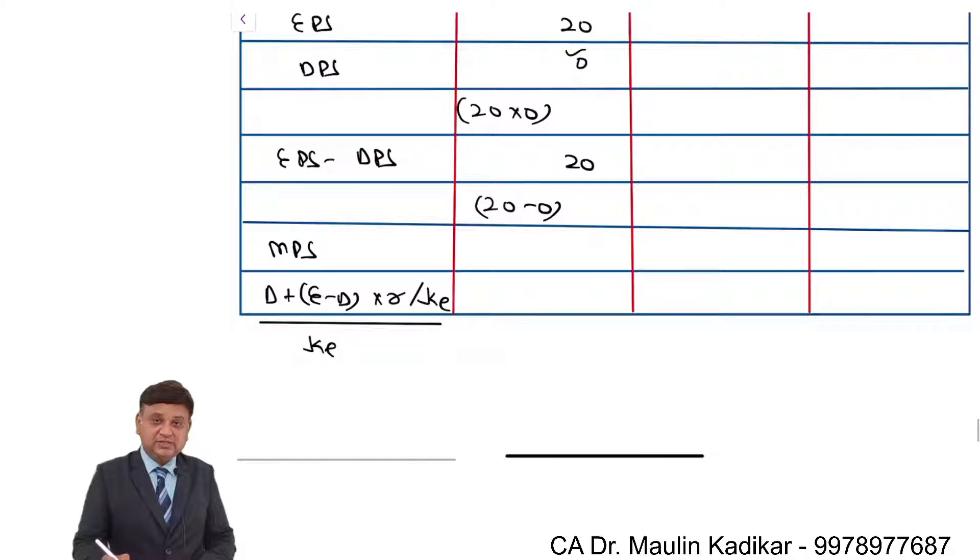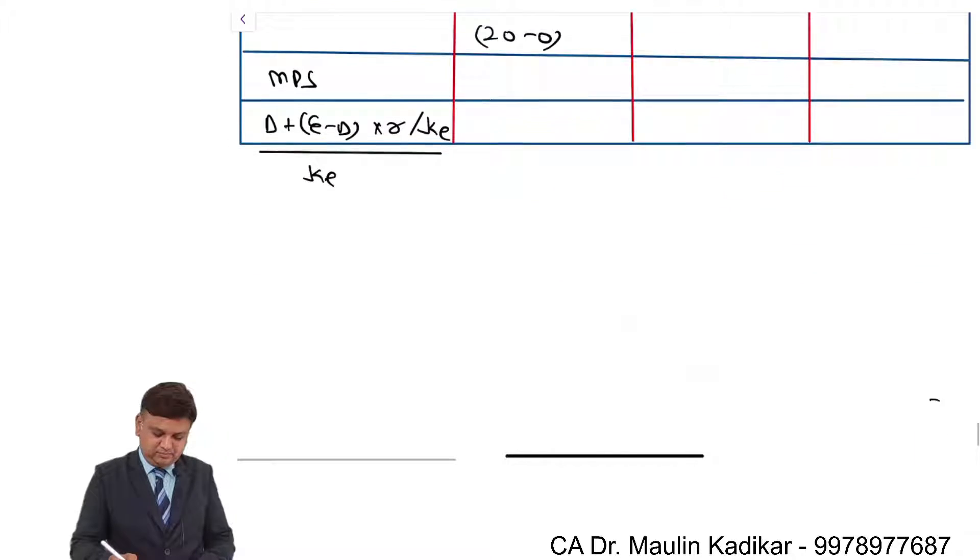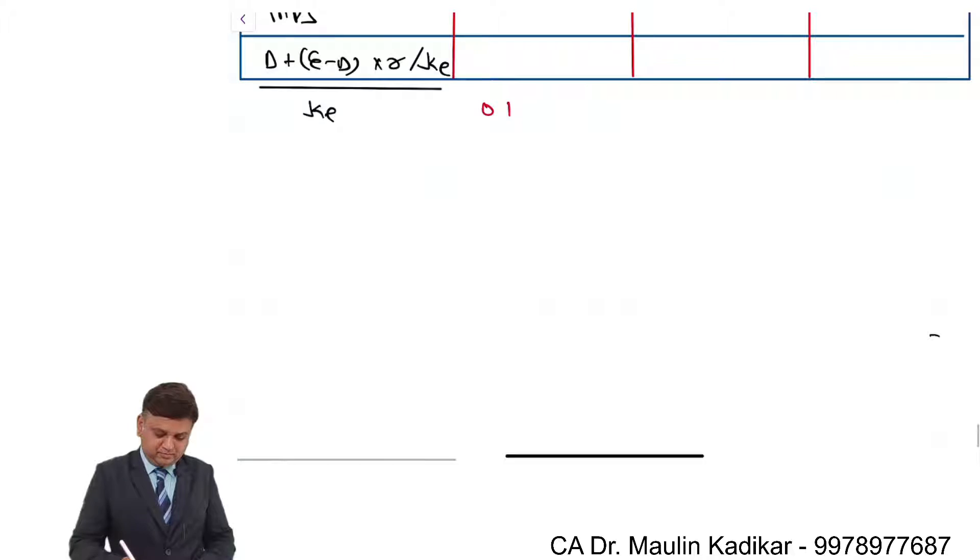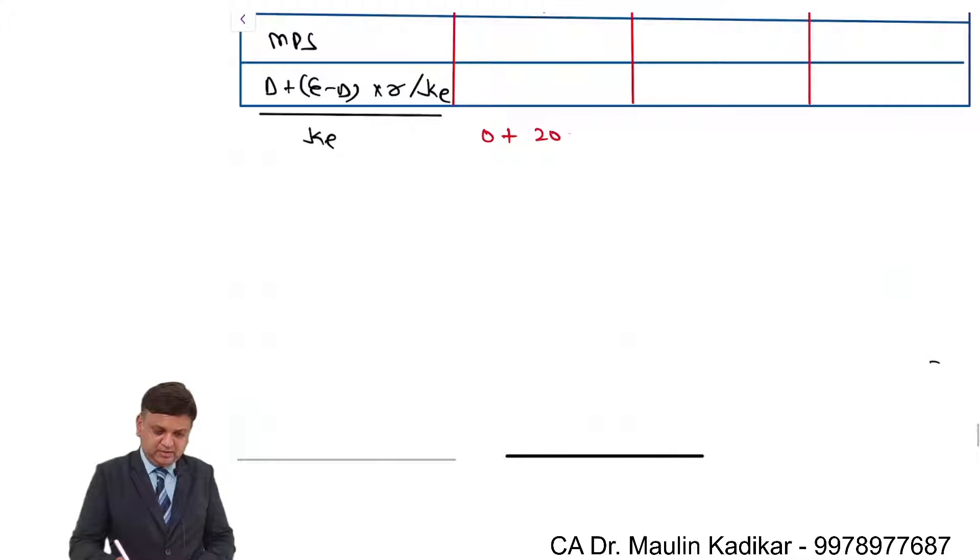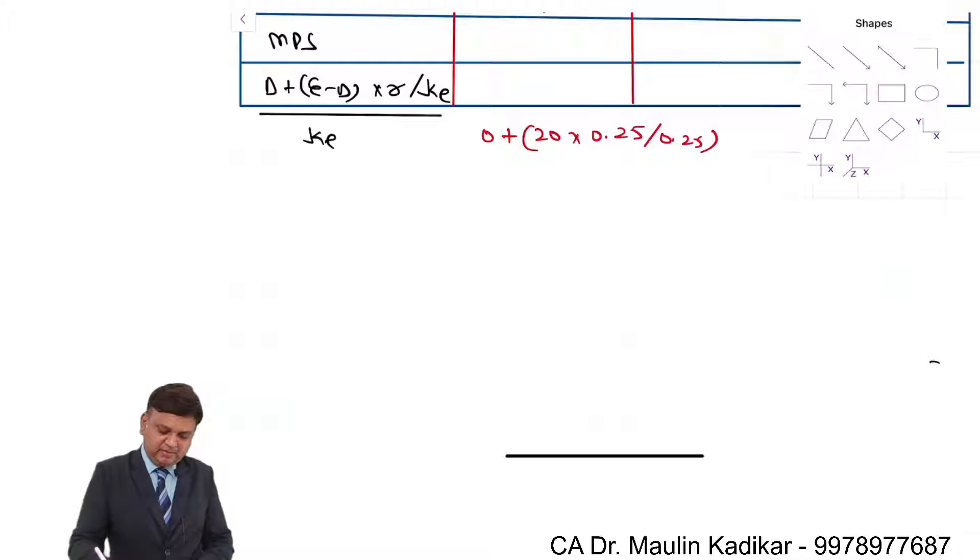What is dividend? It is 0. EPS minus DPS is 20 into R is 0.25 upon 0.25 whole divided by 0.25.